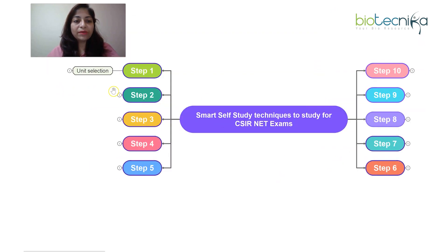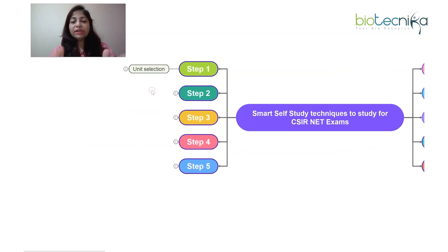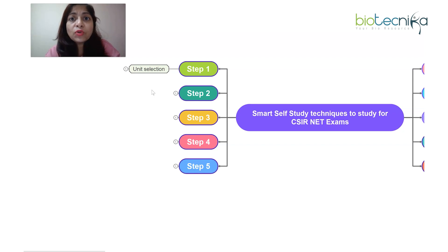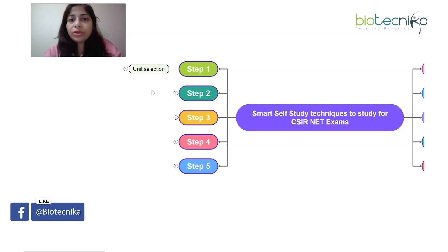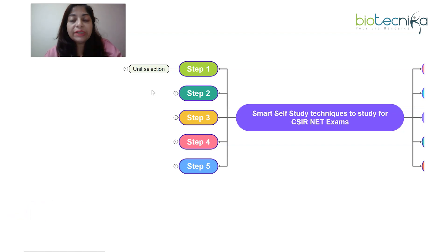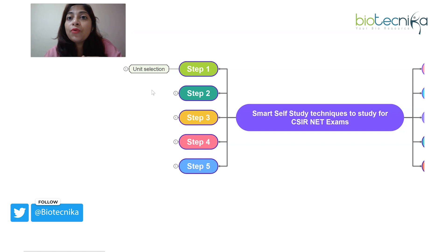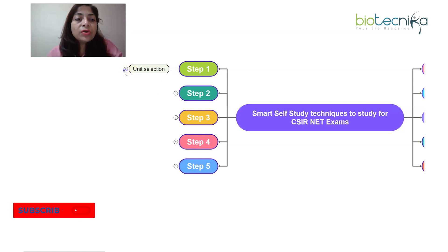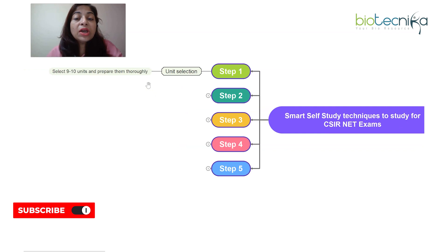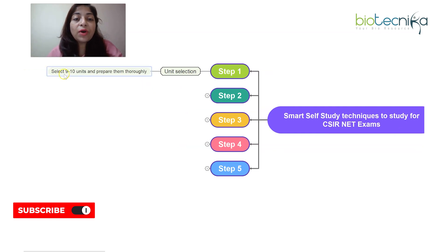Step one is unit selection. First of all, in CSIR NET, when you are starting your preparation, the first thing you should do is take the syllabus and go through it properly. For qualifying in the exam, it is not required that you study each and every unit thoroughly. There is no need to go for all 13 units. You have to select only 9 to 10 units.